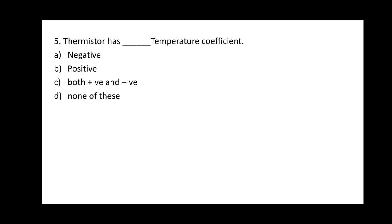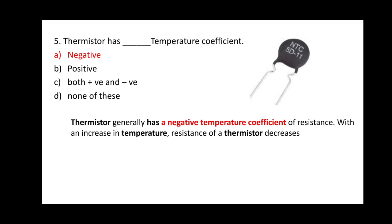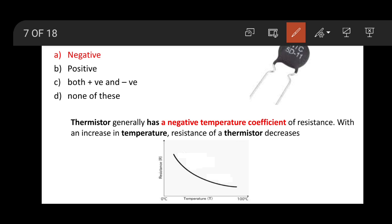Question 5: A thermistor has a dash dash temperature coefficient. Options: A) Negative, B) Positive, C) Both positive and negative, D) None of these. The correct option is A — a thermistor has a negative temperature coefficient, NTC. A thermistor generally has a negative temperature coefficient of resistance; with an increase in temperature, the resistance of the thermistor decreases.